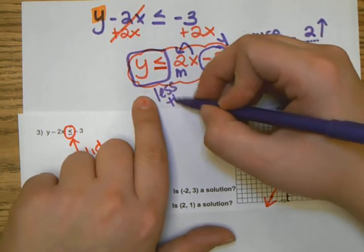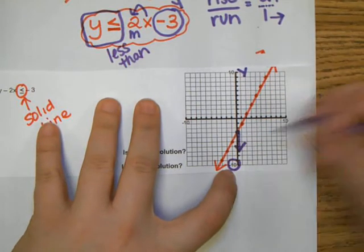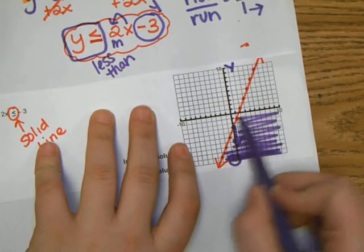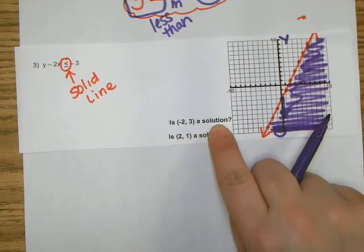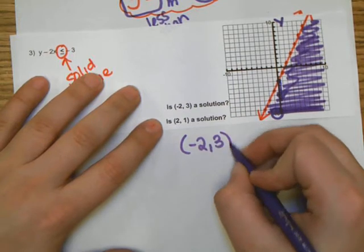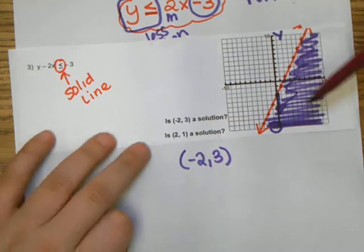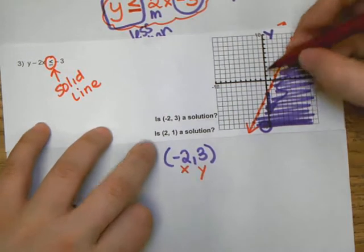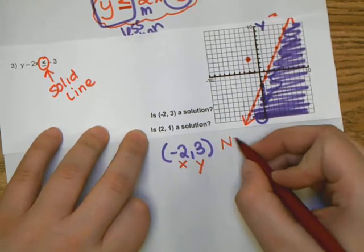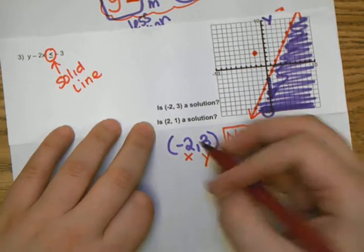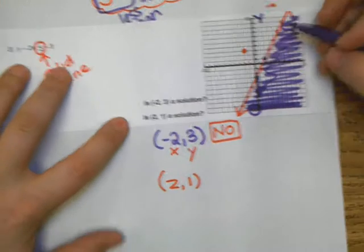Now we shade. Read the equation where y is by itself: y is less than or equal to. The y values are less down here on the y-axis, so we shade below the line. The shading represents all solutions. To check if the point negative 2, 3 is a solution, we look at the graph — is that point in the shaded region? No, so negative 2, 3 is not a solution.